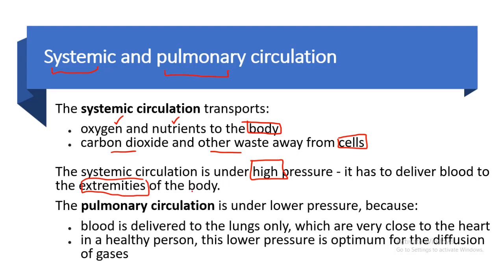The heart has to send blood to the top region — meaning your brain — and also to the fingers and toes. So it must be under high pressure so that blood can be transmitted quickly throughout the body.